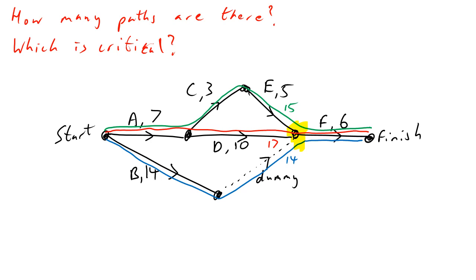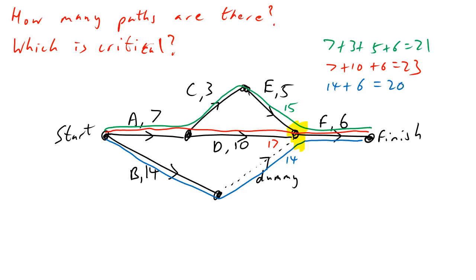Which path takes the longest to complete? The A–D path takes the longest. Once all three are done you can then do F and finish. Looking at the total values: the green path is 7+3+5+6 = 21; the red path is 7+10+6 = 23; the blue path is 14+6 = 20 (ignoring the dummy, which has a value of zero). The critical path is the red path at 23 — you have to wait at that node for D to finish before you can start F.